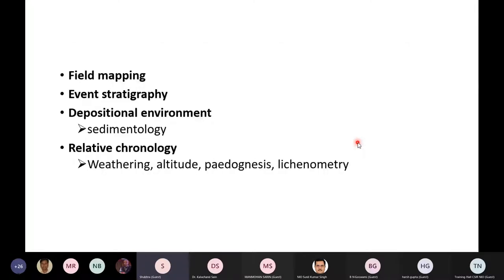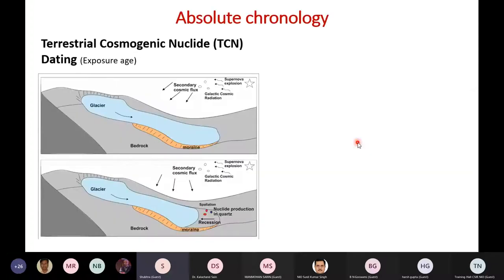So we extensively map these landforms, build the event stratigraphy, including the cross-cutting relationships, also infer the depositional environment using basic sedimentology, and try to establish a relative chronology using attributes like degree of weathering, altitude, pedogenesis, and sometimes like geometry also in the field. Another major tie point in these studies is that of the absolute chronology.